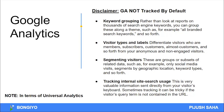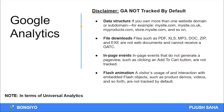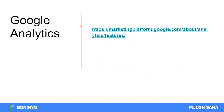Tracking internal site search — for example, if your website has a search box and users type keywords to search within the website — this is also not done by default in Google Analytics and needs to be set up manually.